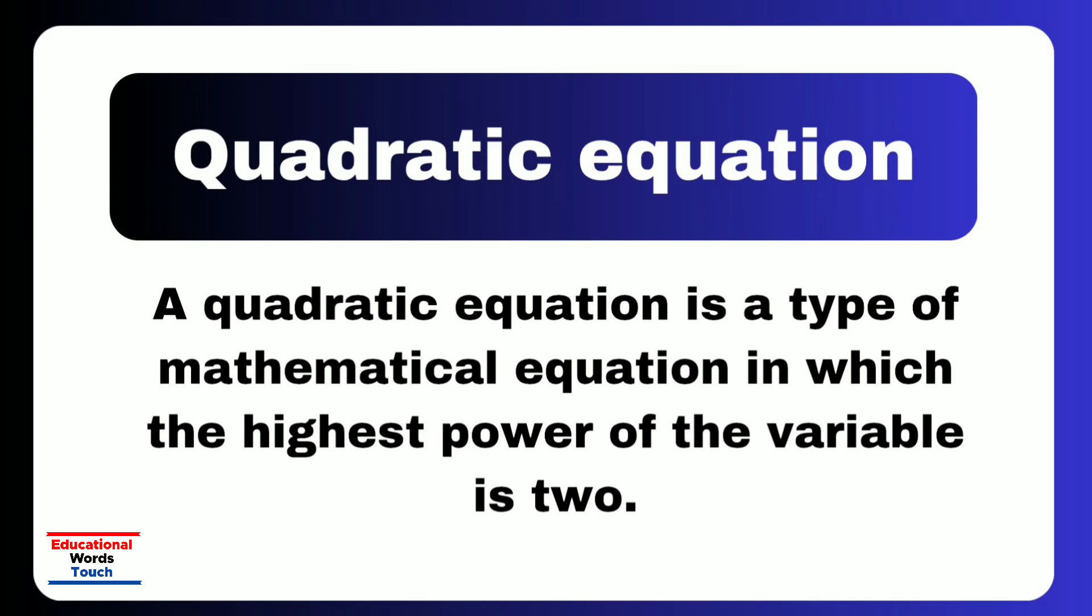depending on the sign of coefficient a. The point where parabola changes direction is called the vertex, and it is very useful in finding the maximum or minimum value of function.